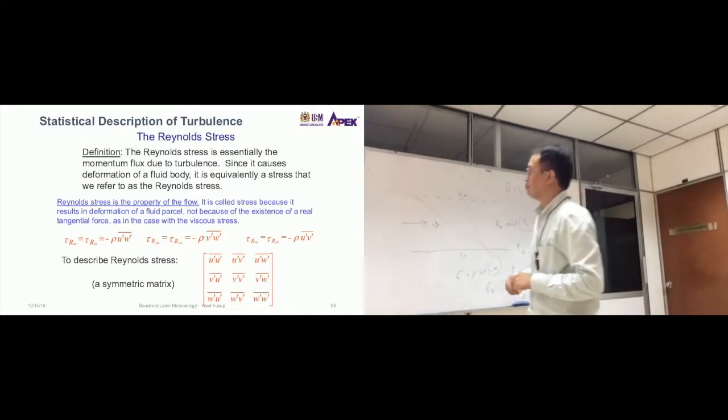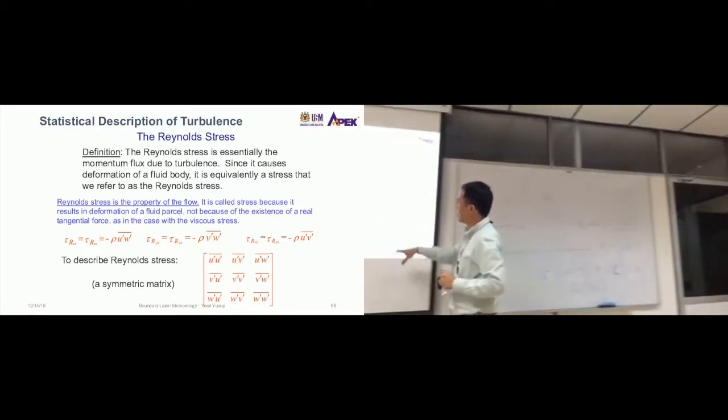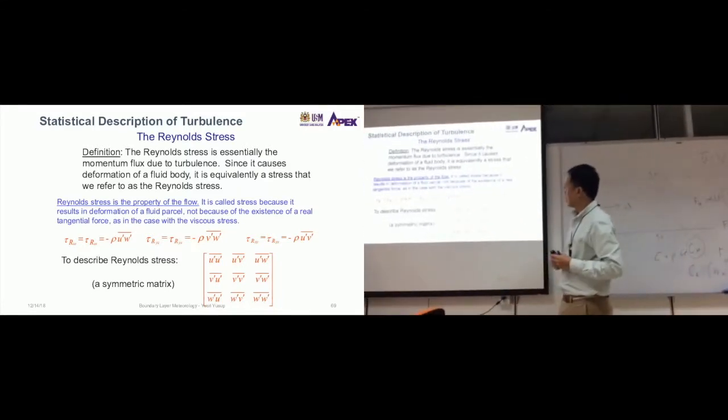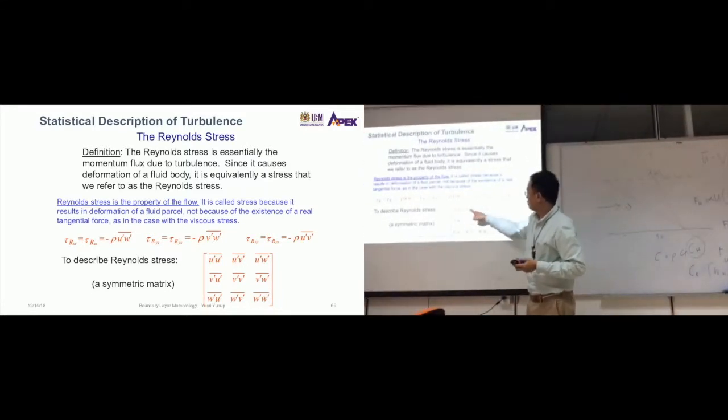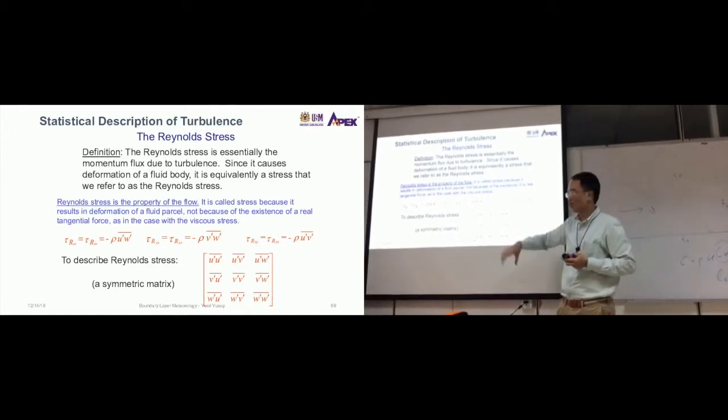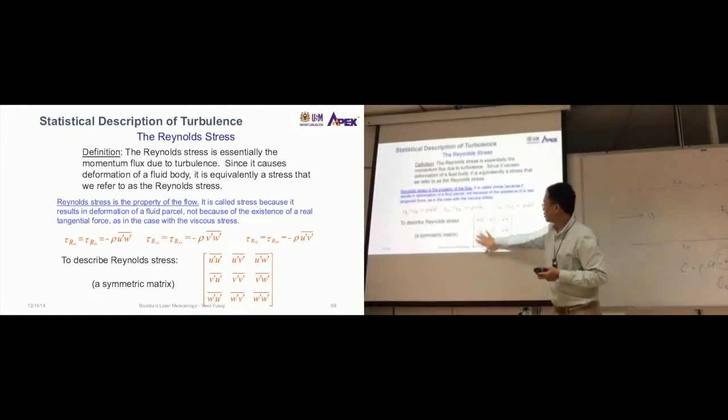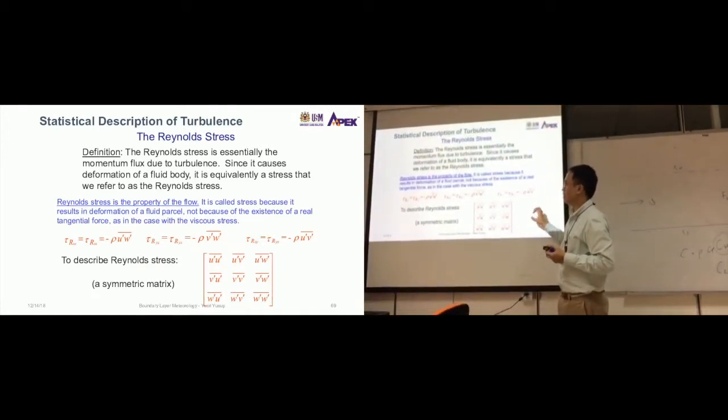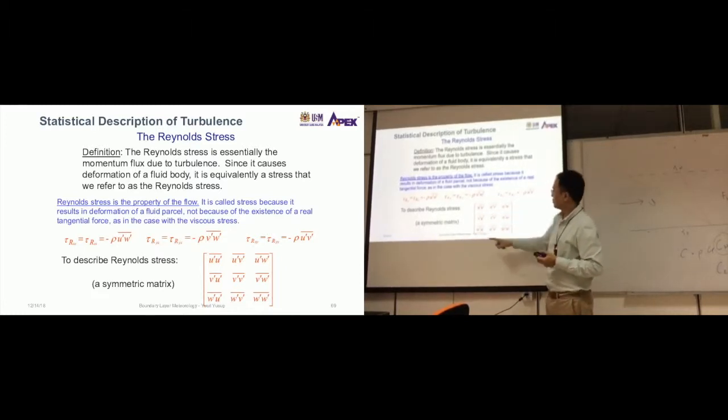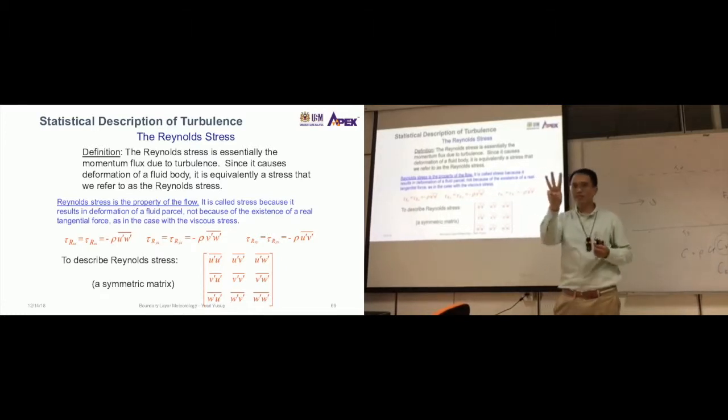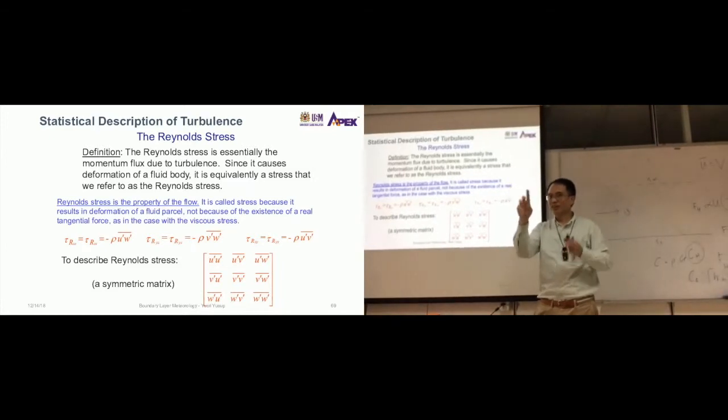To describe Reynolds stress, let's just look at this. These are all the momentum transfers and so on—the things that affect the flow. You have u' times u', v' u', w' u', v', and so on. This is the combination: you have three—u, v, and w—so the three combinations give you nine combinations of stress.